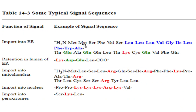The next question concerns the type of signal. The sequence given is proline-proline-lysine-lysine-lysine-arginine-lysine-valine. This signal is a nuclear localization signal (NLS), which is important for transporting substances into the nucleus. It is present in all molecules that are destined to enter the nucleus.